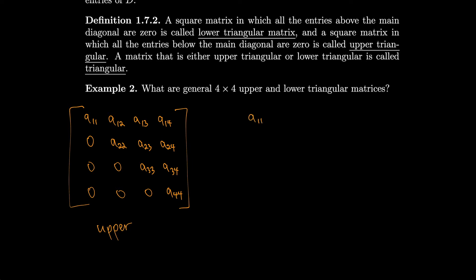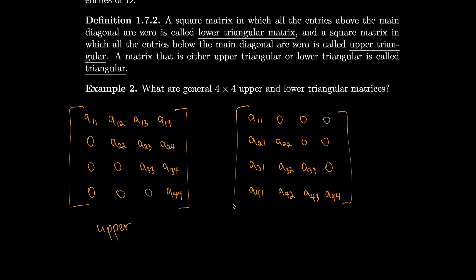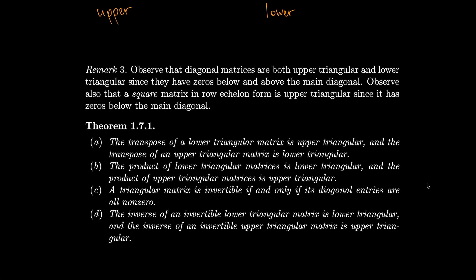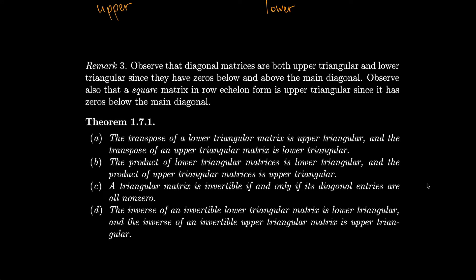For lower triangular, the zeros go on top. We get three zeros in the top row entries above the diagonal, two in the row below, one in the next, and the entire bottom row has entries that don't have to be zero. Observe that diagonal matrices are both upper and lower triangular, since they have zeros below and above the main diagonal. Also, a square matrix in row echelon form is upper triangular, since it has zeros below the main diagonal with leading ones.